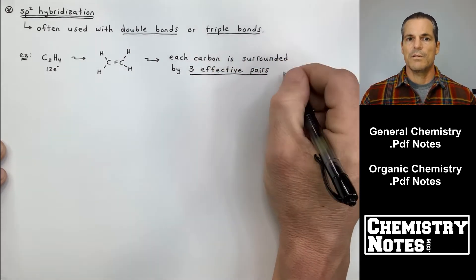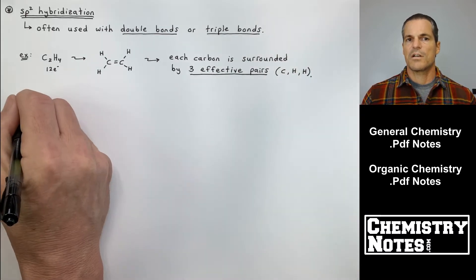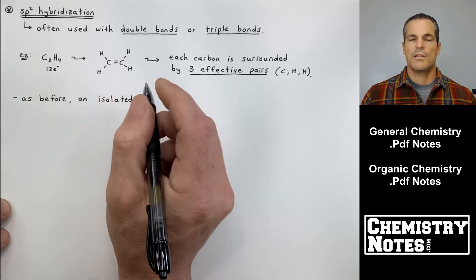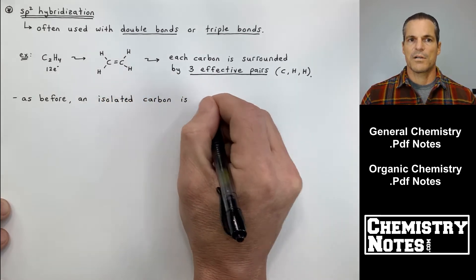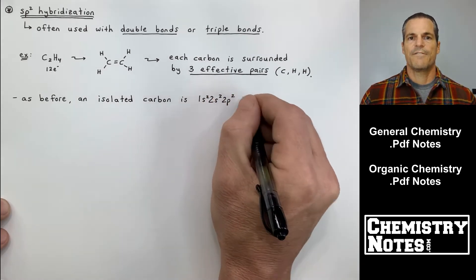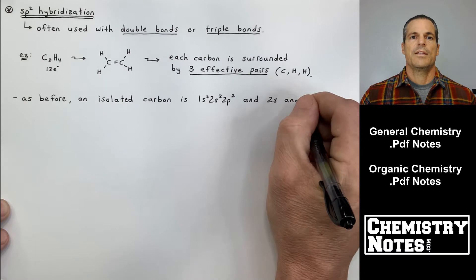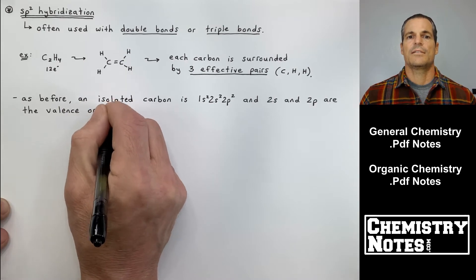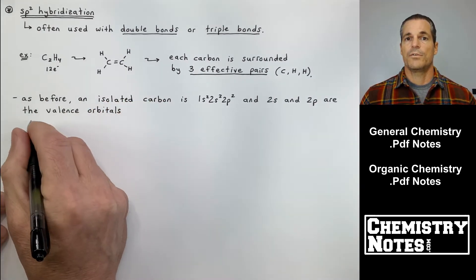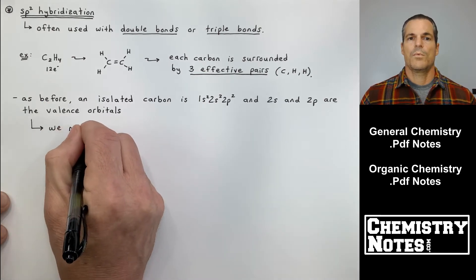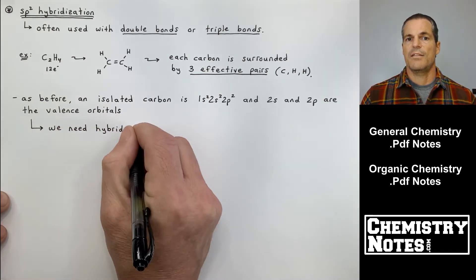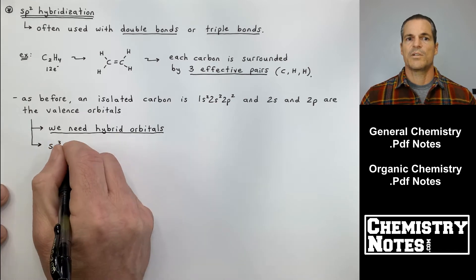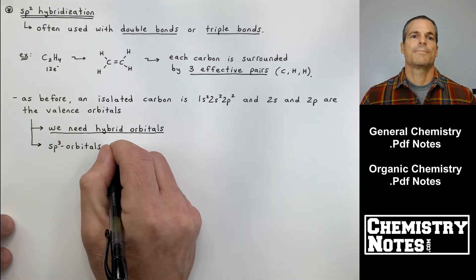Each carbon is surrounded by three effective pairs. If you look at the carbon on the left, it is attached to two hydrogens and then one carbon — never mind that it's a double bond, it's one effective pair. An isolated carbon, if it were just a freestanding atom, has the electron configuration 1s2 2s2 2p2. We'll ignore the 1s because it's not a valence orbital, so the 2s and the 2p are the valence orbitals that we're going to mix together to make the hybrid orbitals.